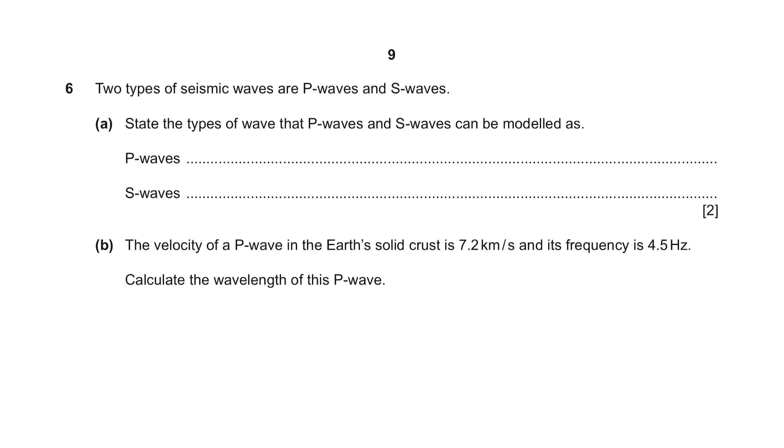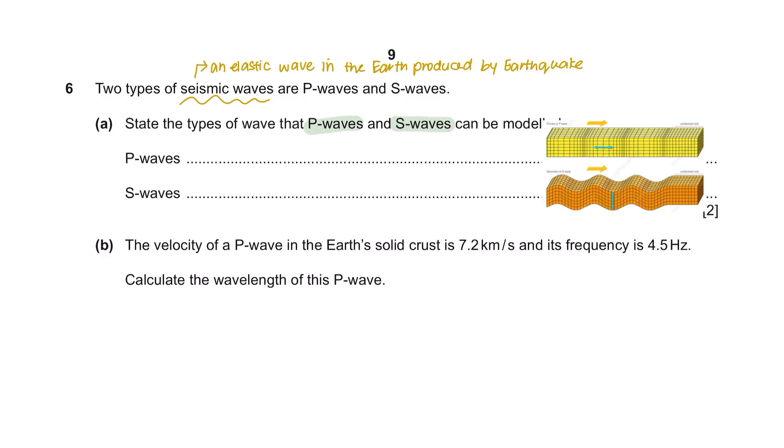Question 6. Two types of seismic waves are P waves and S waves. Seismic waves are elastic waves in the earth produced by earthquakes. Question A: State the type of wave that P waves and S waves can be modeled as. This is what P waves and S waves look like. As you can see here, P waves move in parallel so they can be modeled as longitudinal waves, whereas S waves move like transverse waves.